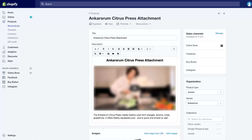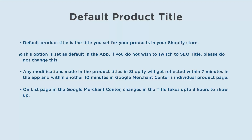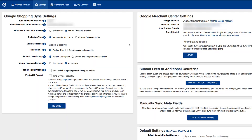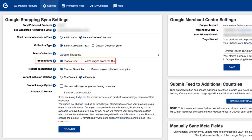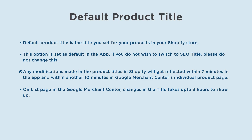Default product title is the title you set for your products in your Shopify store. This option is set as default in the app. If you do not wish to switch to an SEO title, please do not change this. Any modifications made in the product titles in Shopify will get reflected within seven minutes in the app.